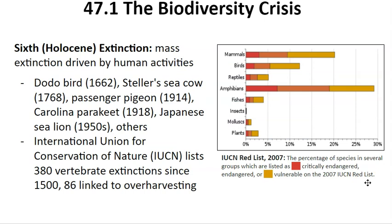The term Holocene mass extinction — also called the sixth extinction — refers to the ongoing period of significant biodiversity loss during the Holocene epoch, which started about 11,700 years ago and continues to the present day. While not as dramatic as some major mass extinctions, the Holocene extinction is notable for the accelerated rate at which species are disappearing, largely due to human activities. Key factors contributing include habitat destruction, over-exploitation, pollution, climate change, introduction of invasive species, and the spread of diseases. Notable examples of species affected include various mammals, birds, amphibians, reptiles, and insects. Some high-profile extinctions or near-extinctions include the dodo bird, Steller's sea cow, passenger pigeon, Carolina parakeet, Japanese sea lion, West African black rhinoceros, and the Pinta Island tortoise.